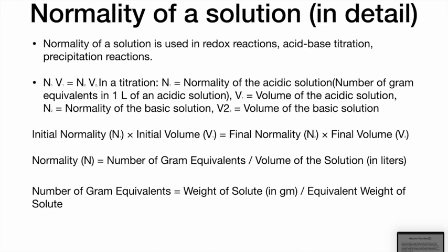In a titration, we take a particular volume of acid and titrate it with the corresponding base. A coloring agent is added, and when the acid is neutralized, there is a color change. At that point we note down the volume and find the normality. So initial normality × initial volume = final normality × final volume. Normality = number of gram equivalents / volume of solution in liters.